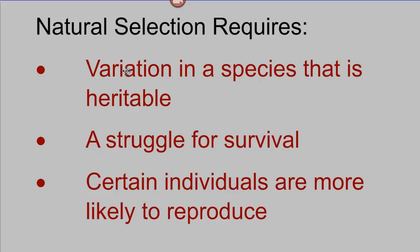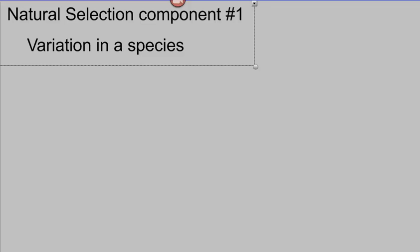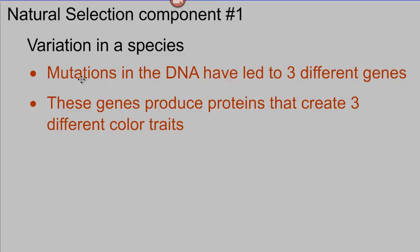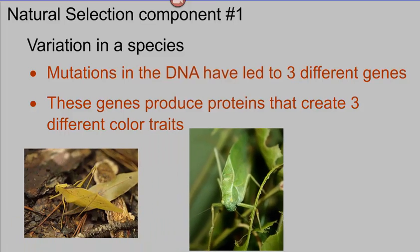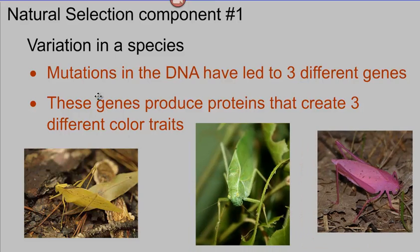The first component is that there has to be variation that is heritable — this is inherent to evolution and to natural selection. The second is that there has to be a struggle for survival, and certain individuals have to be more likely to reproduce than others as a result. In this case study, we have three different genes created by mutations, producing three different proteins with three different color traits: green, yellow, and pink. As a result of those mutations, we have variation within this population of katydids.